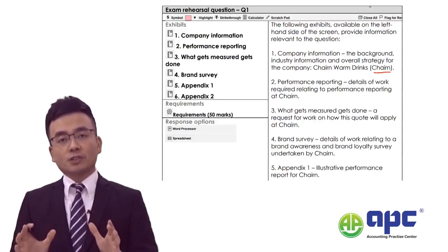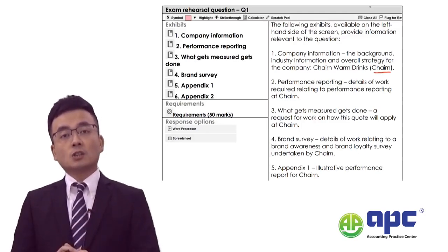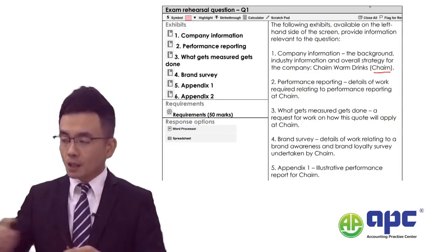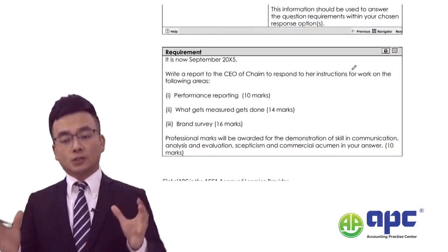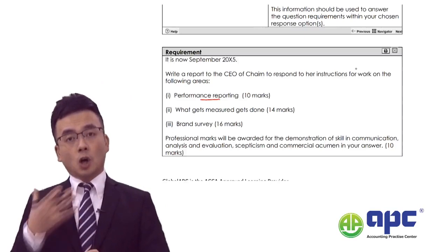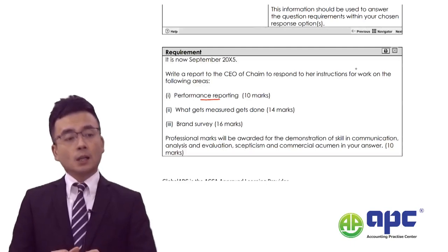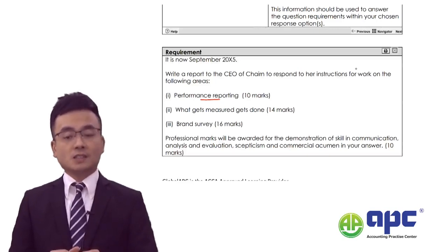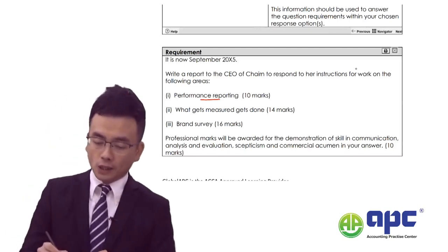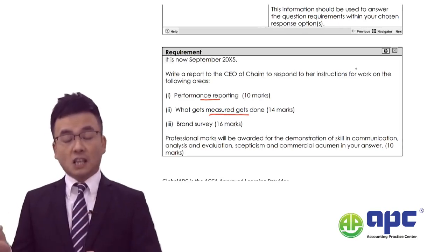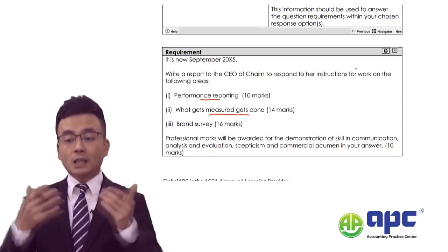I will break this question down into several videos for different requirements, and you will see we use a very standardised format to answer these types of questions appearing in the actual exam. For requirement A, you are required to write a report about performance reporting — 10 marks to comment on the report given by the examiner. We will have our standardised format for how to answer these questions in each and every sitting, then comment on 'what gets measured gets done', linking with the actual case information.